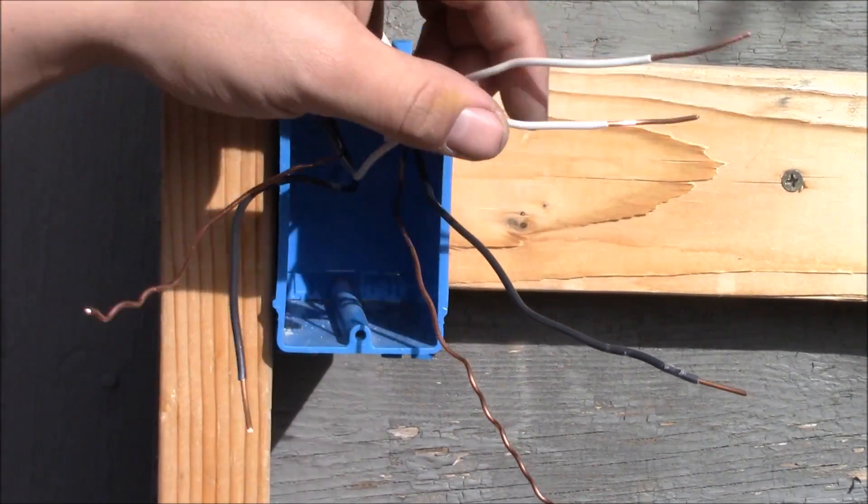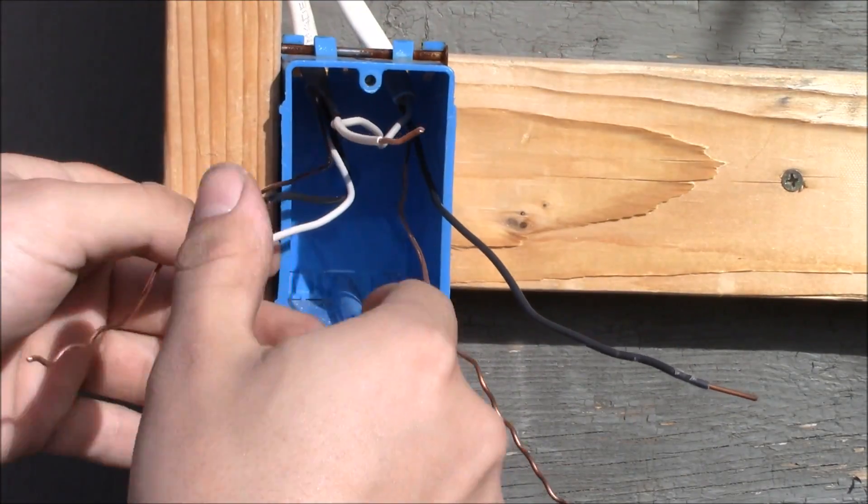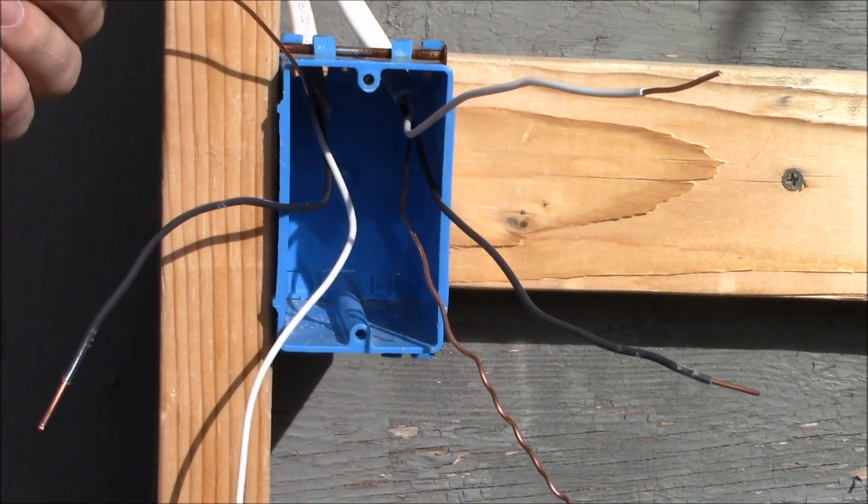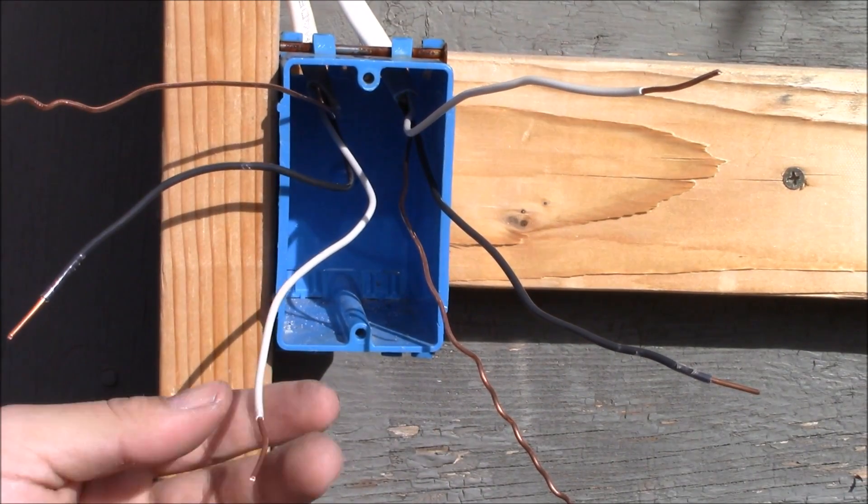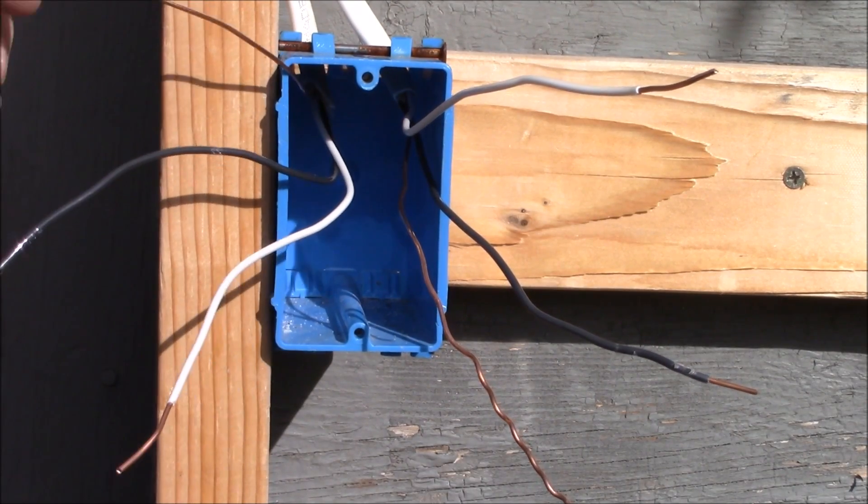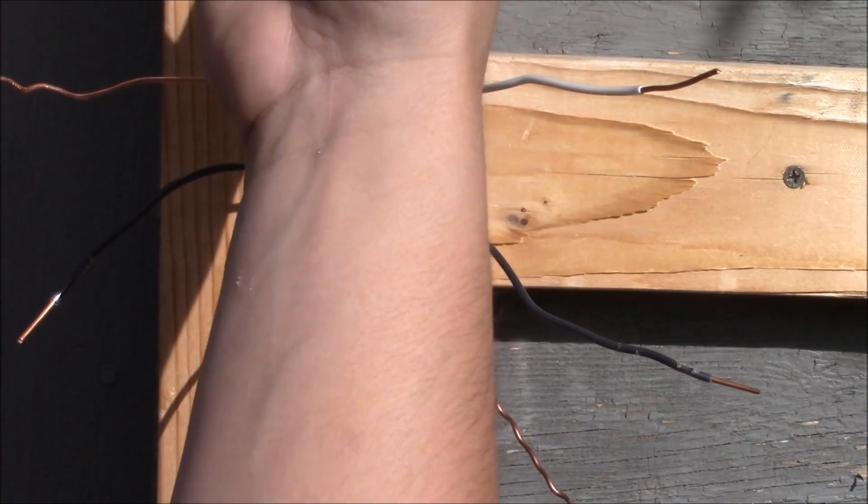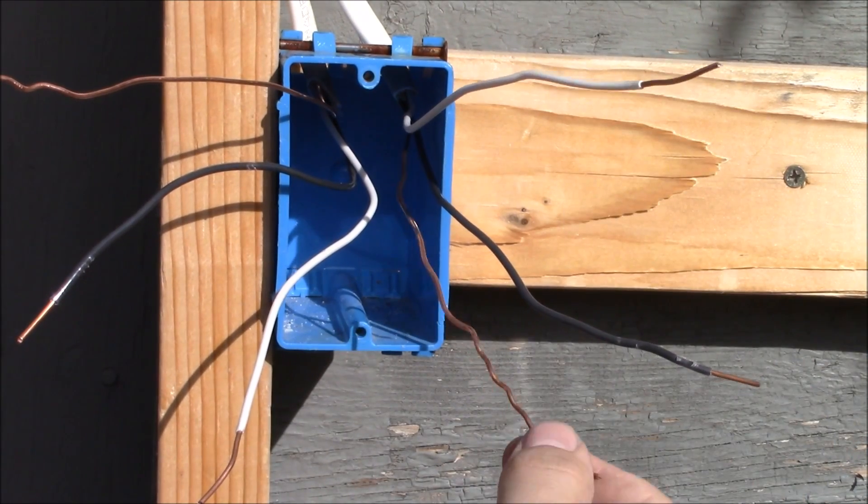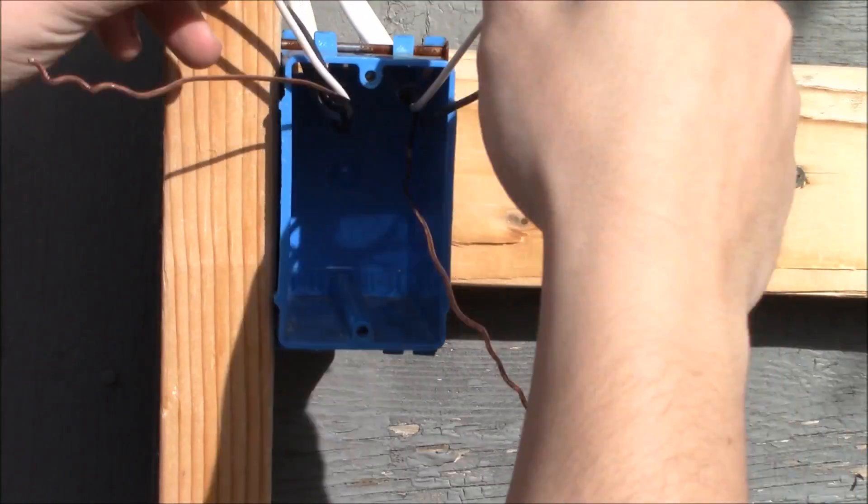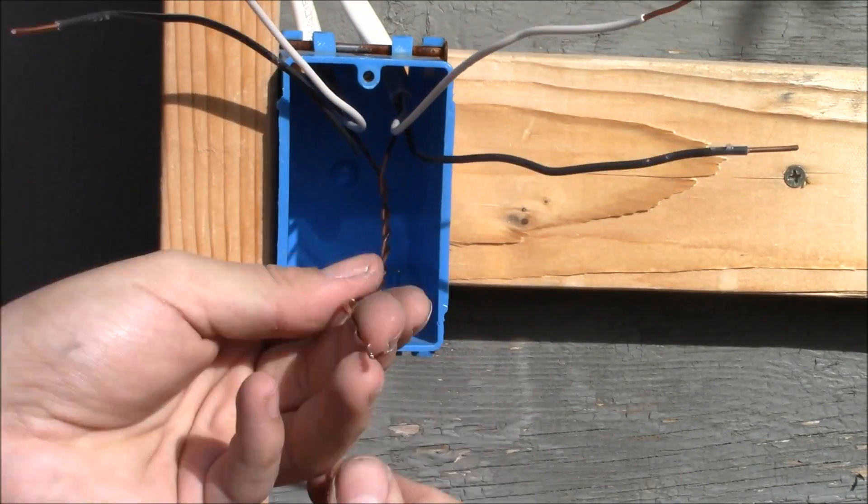To wire in a single pole switch, you're going to need some 14-2 with ground. A 14-2 with ground has a black hot conductor, a white neutral conductor, and a bare ground wire. Going to the light itself is also a 14-2 with ground: a black hot conductor, a white neutral conductor, and a bare ground wire.